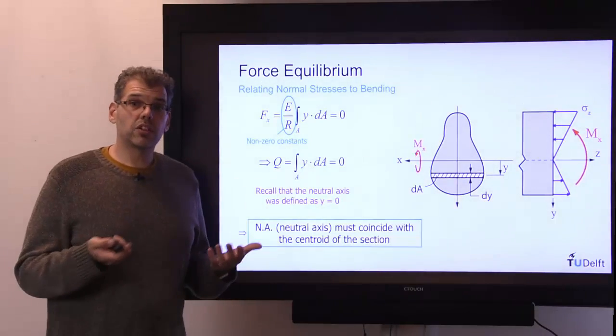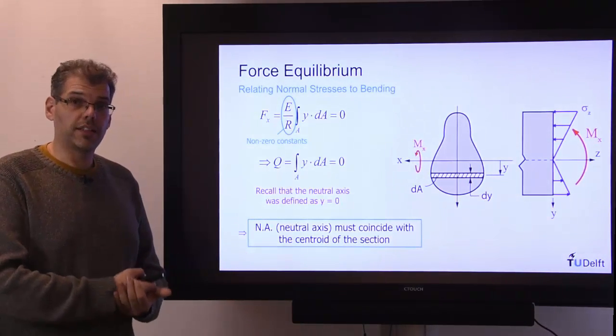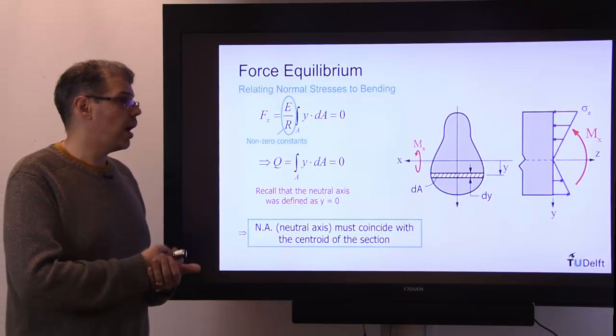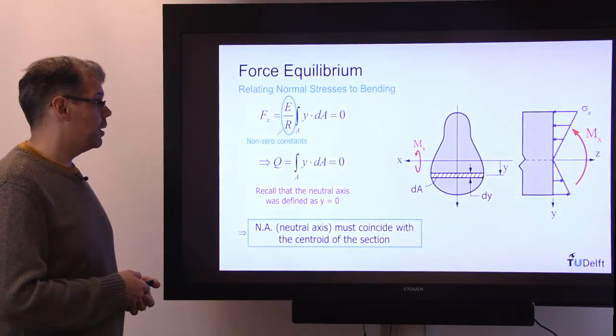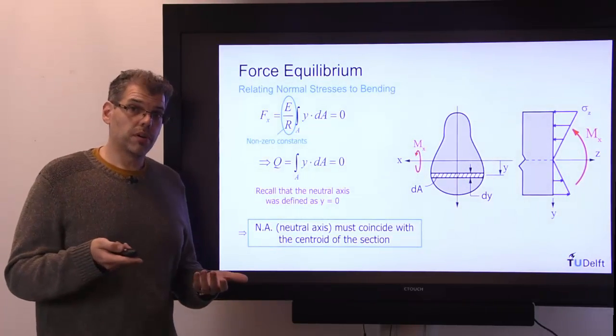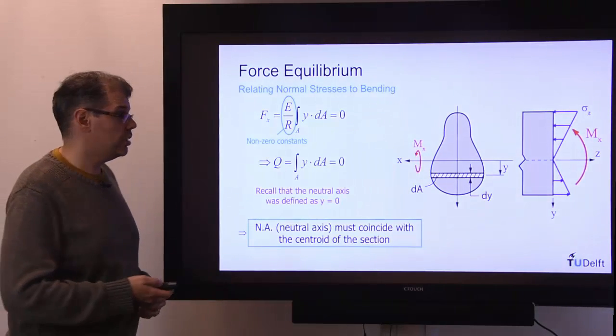That is convenient. It helps us locate very quickly that datum that we've been using in all of our analysis, because we always specify y as the distance from the neutral axis. So that completes the force equilibrium. It allows us to establish that the neutral axis must pass through the centroid.